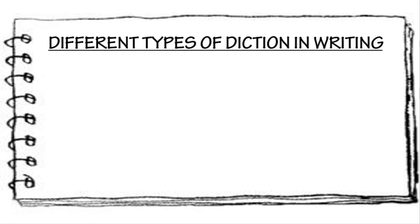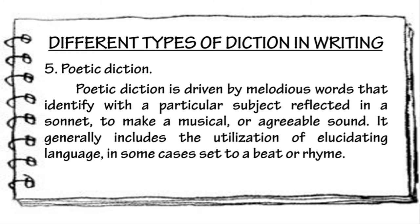And the last but not the least, the poetic diction. Poetic diction is driven by melodious words that identify with a particular subject reflected in a sonnet to make a musical or agreeable sound. It generally includes the utilization of elucidating language. In some cases, it is used to set a beat or rhyme. Poetic diction is the term used to refer to the linguistic style, the vocabulary, and the metaphors used in writing poetry.